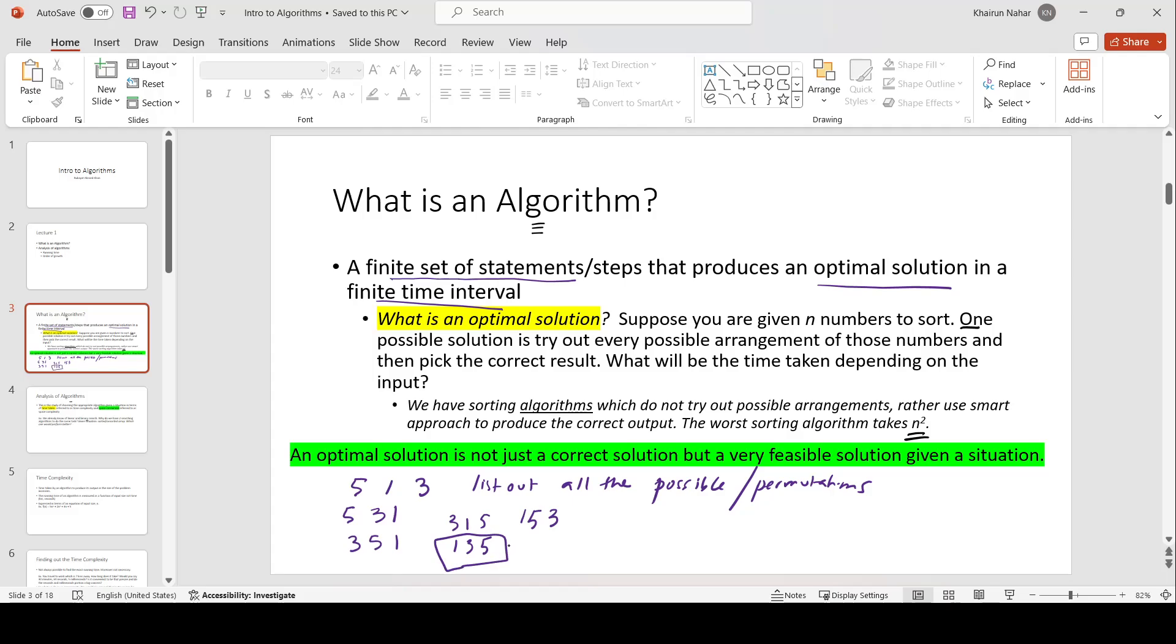Now, the question is, is this an optimal solution? Now, if we apply the same approach for 300 or 3000 numbers, just imagine the time it will take. Three numbers, it took me 3 factorial amount of time. Therefore, 3000 numbers and listing out all the possible permutations of these numbers would take me 3000 factorial. Now, is this a feasible solution? The answer is no. Although, it will give me the correct output, but it's not feasible. Therefore, we do not call this an algorithm.